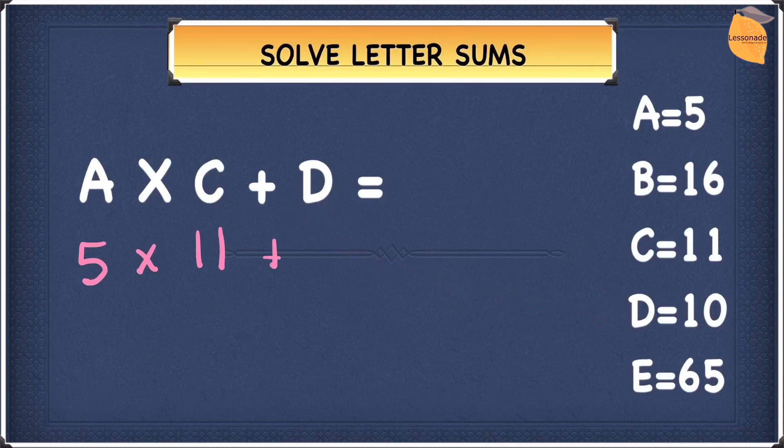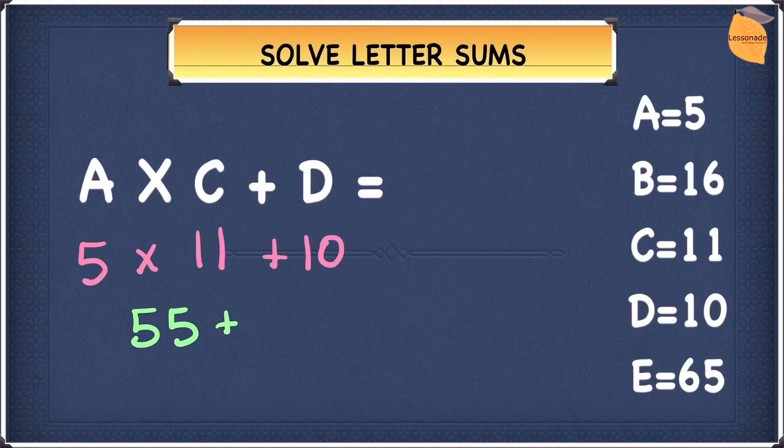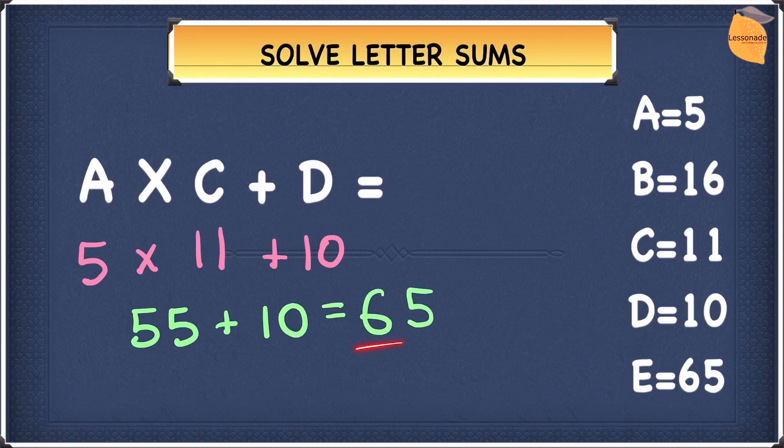5 times 11 plus 10. 5 times 11 is going to be 55. Plus 10 is going to be 65. And as you guys could see, 65 is right here. So, that means our answer is going to be E. A times C plus D is E.